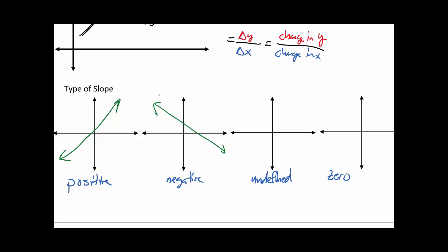Undefined is if you look at a flat vertical line. So in other words, if there's only changes in y values, but no change in x, that's undefined. And if you look at a flat horizontal line, you end up getting a zero sloped line.